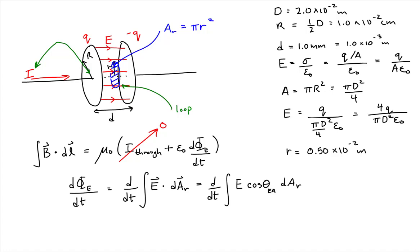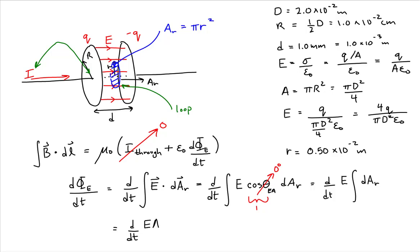If we assume that the area vector of our Amperian loop is parallel to the electric field, then we have a cosine of zero degrees, which is just one. Also, since the electric field is constant with respect to area, we just have the integral of the surface differential bounding the Amperian loop. When we evaluate that integral, we get the time rate of change of the product of the electric field and the area of our Amperian loop.